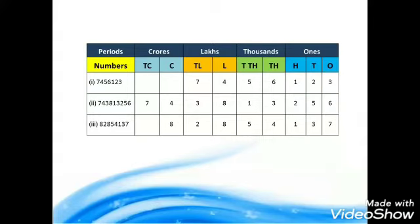While reading a numeral, we read it as 74,56,123. For the number 7456123: the digit 3 is in the ones place, 2 is in the tens place, 1 is in the hundreds place, 6 is in the thousands place, 5 is in the ten thousands place, 4 is in the lakhs place, and 7 is in the ten lakhs place.